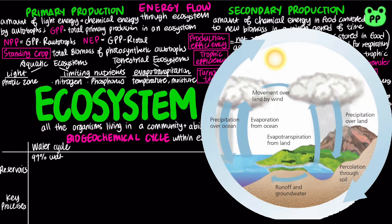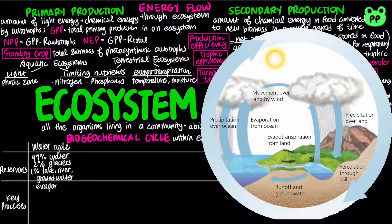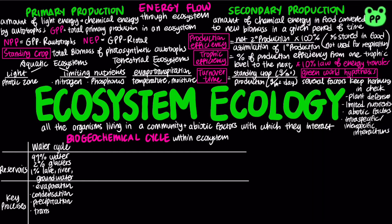Water is essential to all organisms. 97% of the biosphere's water is contained in the oceans, 2% is in glaciers and polar ice caps, and 1% is in lakes, rivers, and groundwater. Water moves by the processes of evaporation, transpiration, condensation, precipitation, and percolation.